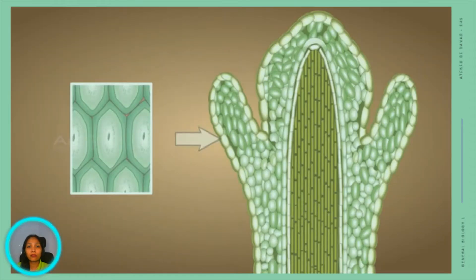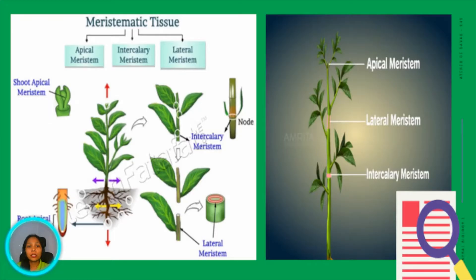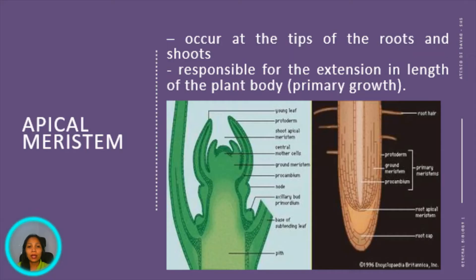Meristematic tissues help in the growth of the plant as they have the ability to divide themselves. Their cells are similar, generally small, and enclosed with thin cell walls. Most plants have two or three main types of meristems: the apical meristem, the intercalary meristem, and the lateral meristem.